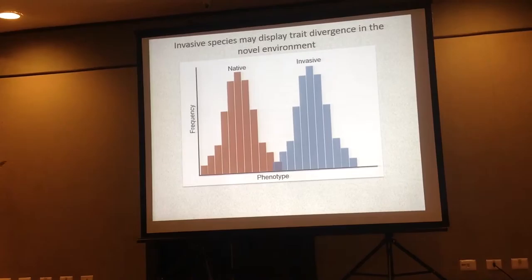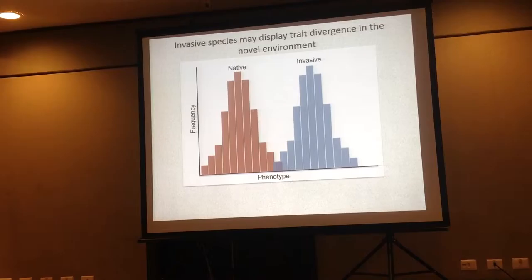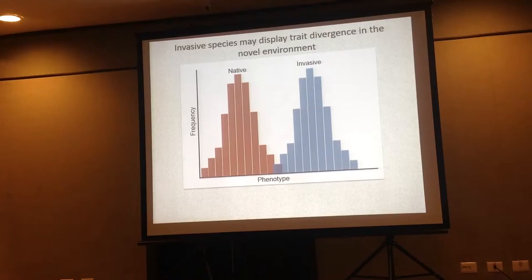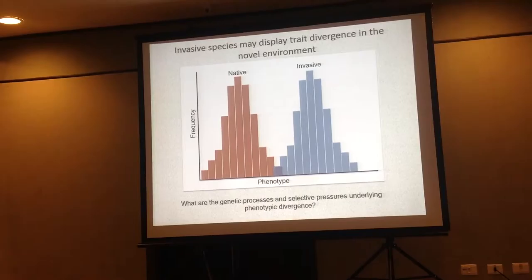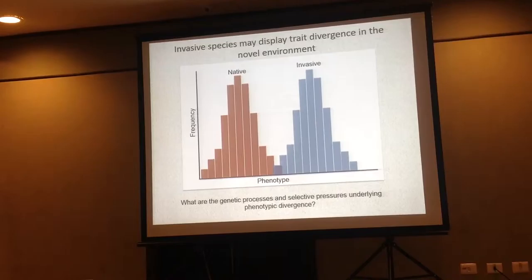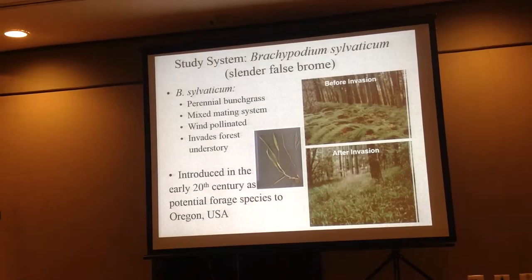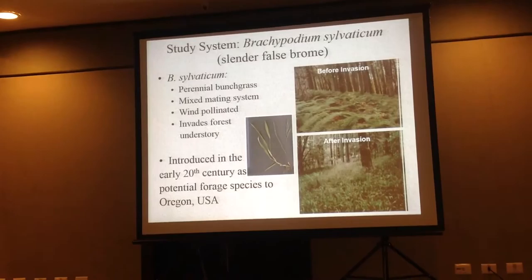One interesting question is looking at why invasive species display trait convergence in their novel environment. This is a generic figure of different phenotypic frequencies in native and invasive populations of an invasive plant. An interesting question is looking at what the genetic processes underlying phenotypic divergence are. For my study system, I use the invasive grass Brachypodium sylvaticum.